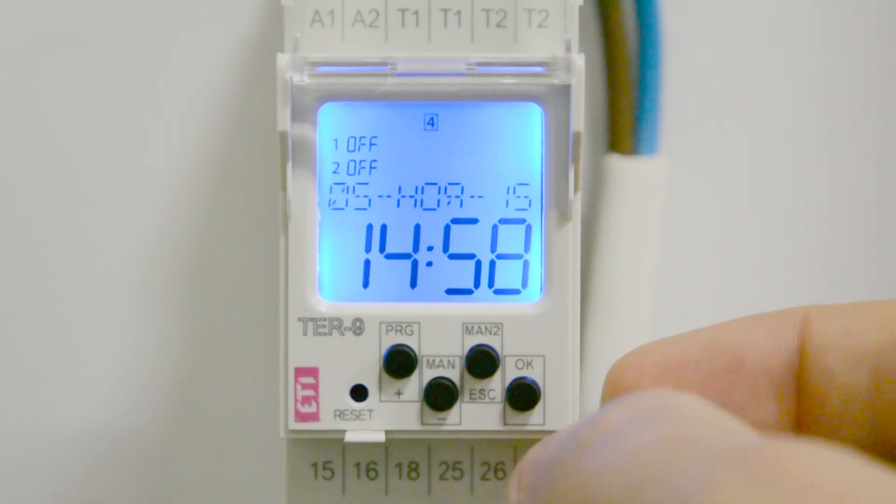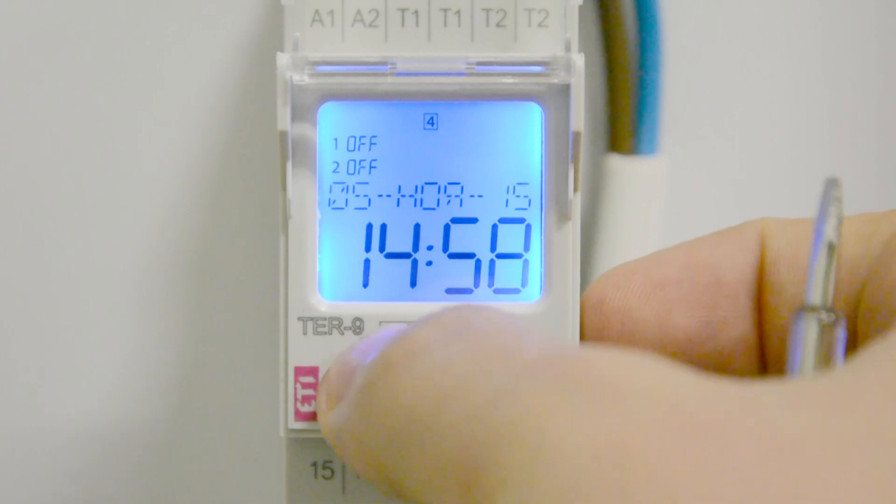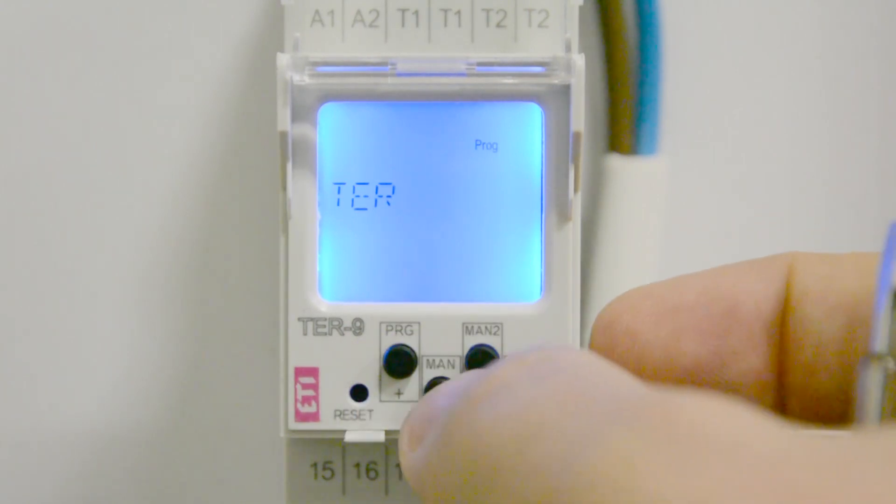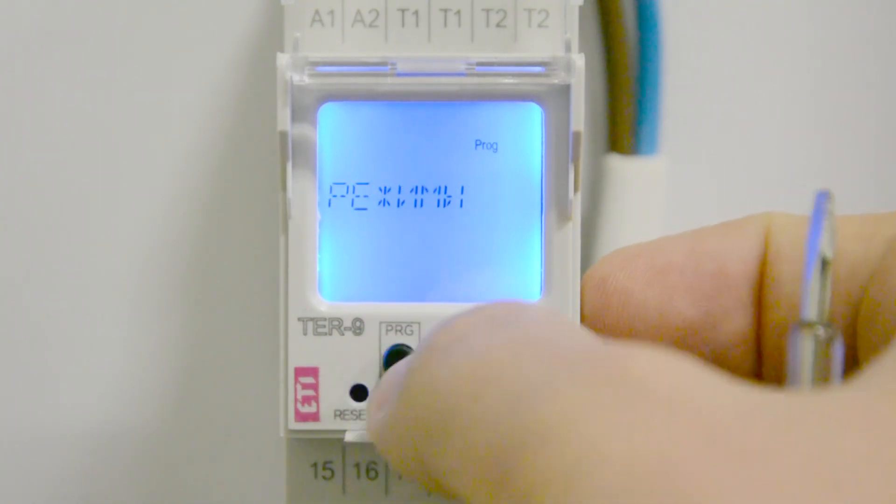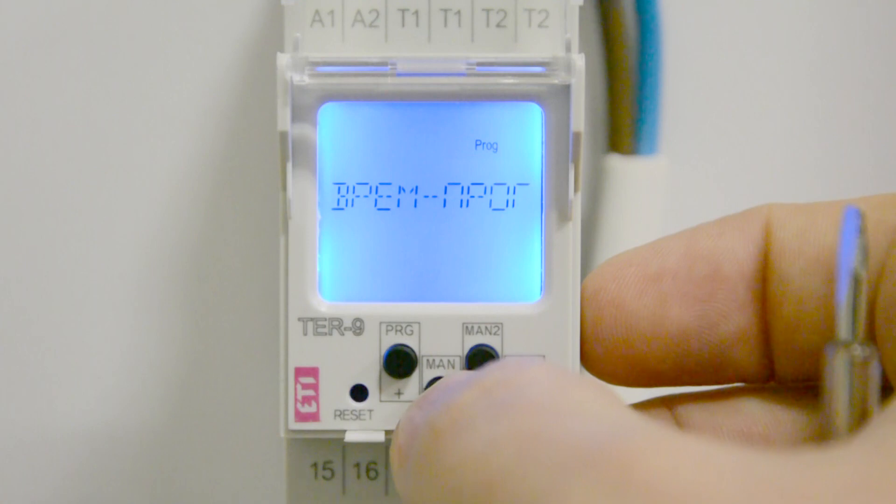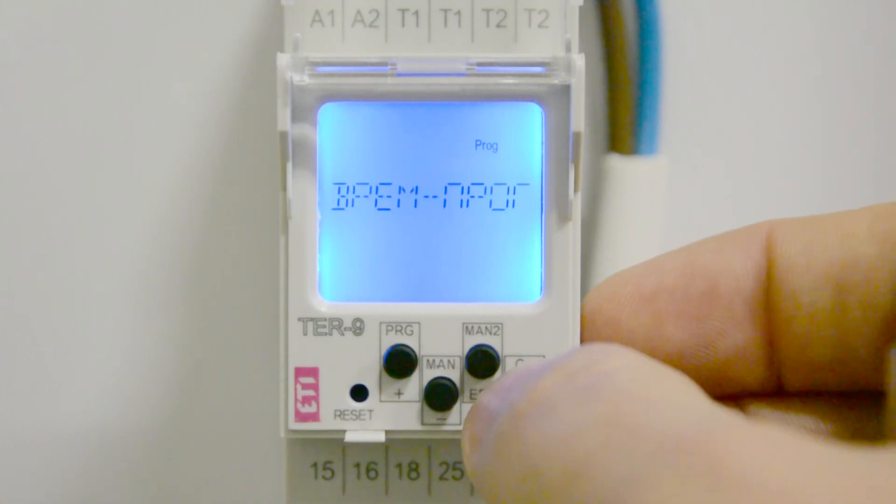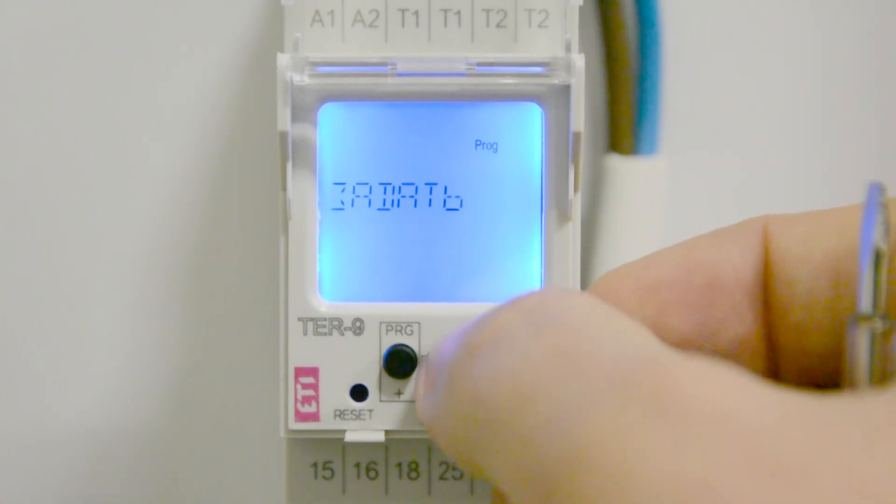With a long press of the PRG button, you enter into the programming mode. You can navigate between menu items by using the plus and minus buttons. To enter the corresponding menu, press the OK button. If within 30 seconds no button is pressed, the device will switch to the main menu.